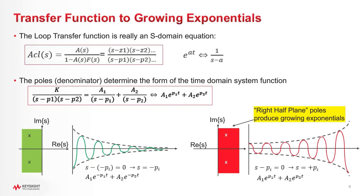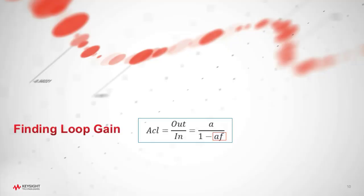The transfer function is really an S-domain equation. We can break these up into poles and zeros — decompose into numerator zeros and denominator poles. The Laplace transform gives an exponential in the time domain, and the exponential is really the key thing that makes something oscillate. A negative-sign exponential decays versus time, which is good. A positive-sign exponential grows, and these things map to the right half S-plane, which produces growing exponentials. If you're an amplifier designer, you do not want to be anywhere near the right half plane with your designs.